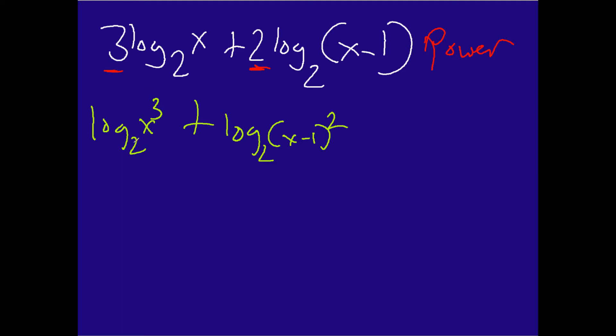And so now, now that we have this addition thing here, we have the same base, we can now use the product property. And so essentially what we end up with is as follows. The final answer is going to be log base 2 of x to the third multiplied by the quantity of x minus 1 squared.